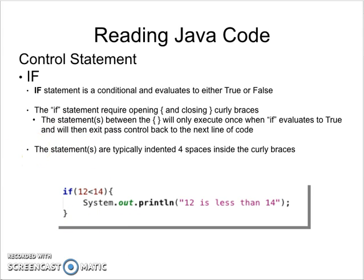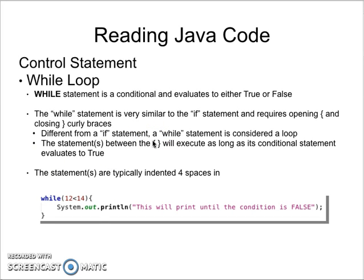Moving on to our next control statement: the while loop. The while loop is also a conditional statement that evaluates to either true or false — it's both a control statement, a loop, and a conditional statement. It's very similar to an if statement and requires an opening and closing curly brace. What's different is that a while loop will repeat itself until it finds its condition to be false, so the statements between the curly braces will execute as long as the conditional evaluates to true.